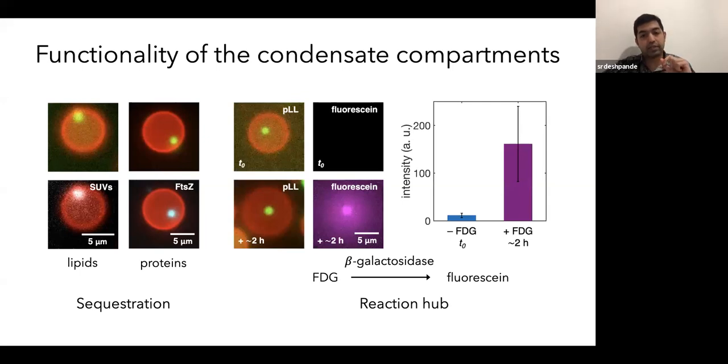And you can also use these condensates as reaction hubs. So we, as a proof of principle, use beta-galactosidase, which converts FDG into a fluorescent product, fluorescein. As you can see here in the images, at the start, you don't see any fluorescence, but after two hours of incubation, you see basically a strong fluorescence coming from the condensate, suggesting that it is acting as a reaction hub for this particular reaction.